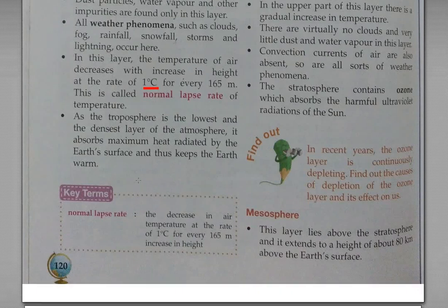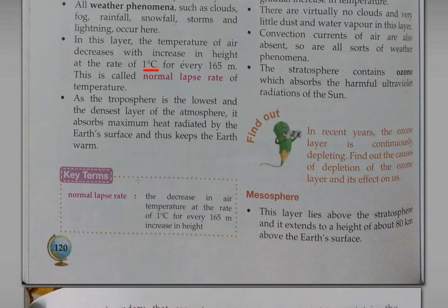As the Troposphere is the lowest and the densest layer of the atmosphere, it absorbs the maximum heat radiated by the Earth's surface and thus keeps the Earth warm.